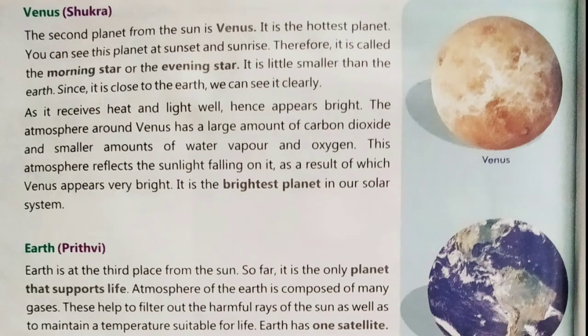The second planet from the sun is Venus. It is the hottest planet. You can see this planet at sunset and sunrise. Therefore, it is called the morning star or the evening star.